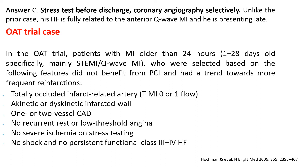Two, akinetic or dyskinetic infarcted wall — not hypokinetic. Three, one or two vessel CAD, no recurrent rest or low threshold angina, no severe ischemia on stress testing, no shock, and no severe persistent functional class 3-4 heart failure. If you have a non-totally occluded artery, or a hypokinetic wall, or residual rest or low threshold angina or ischemia, then the patient is not an OAT trial patient and may benefit from late PCI.